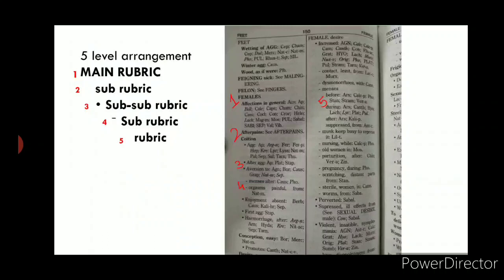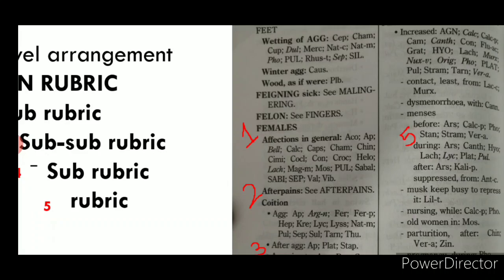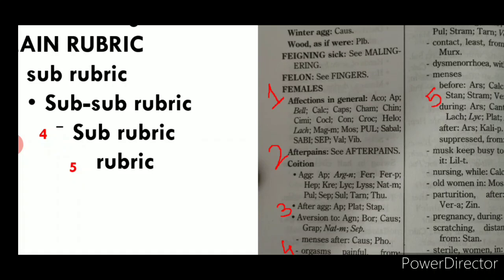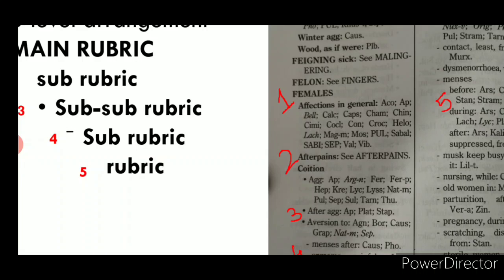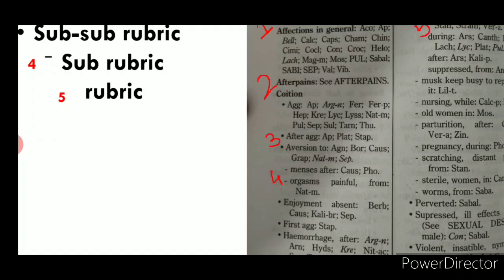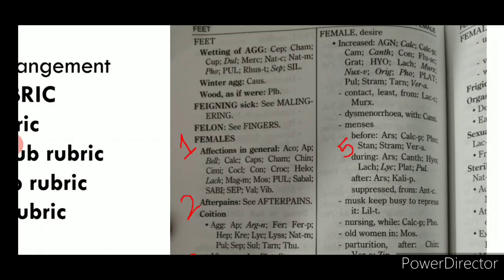In this repertory, rubrics are arranged in five different levels. At the first level, main rubrics are printed in bold capital letters. The second level sub-rubric is printed in bold letters without any denotation. The third level rubrics are in simple Roman letters denoted with a dot, the fourth level with a dash, and the fifth level has no denotation but is written one space below the fourth level rubric.